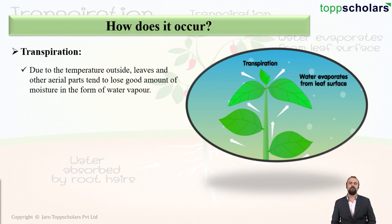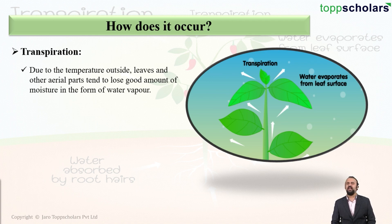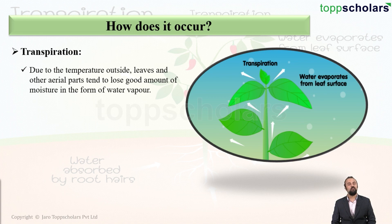Due to the temperature outside, the leaves and other aerial parts of the plant tend to lose a good amount of water or moisture in the form of water vapor. The water absorbed through the roots moves into the stem, branches, and eventually into the leaves and other aerial parts, where it is lost as water vapor — and this process is known as transpiration.